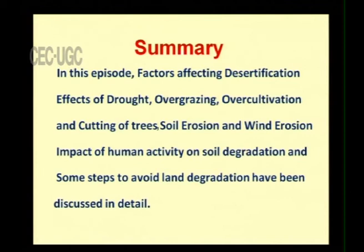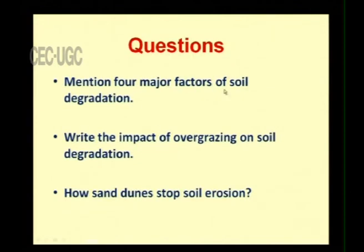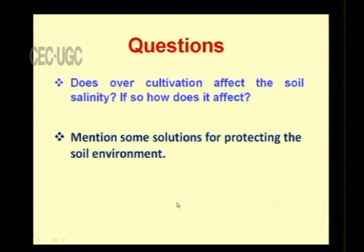Review questions: Mention four major factors of soil degradation. Write the impact of over grazing on soil degradation. How do sand dunes stop soil erosion? Does over cultivation affect soil salinity, and if so, how does it affect? Mention some solutions for protecting the soil environment. So far we have discussed how land is becoming a desert in detail, and now we conclude the episode. Thank you.